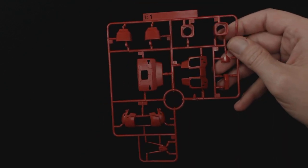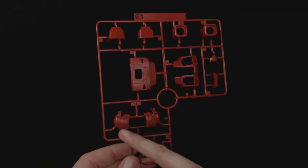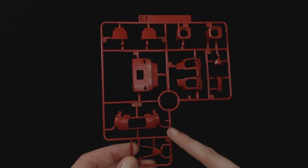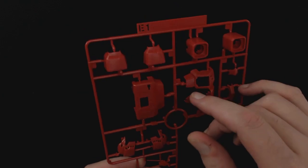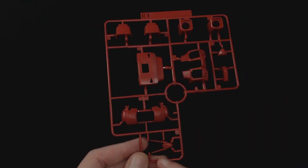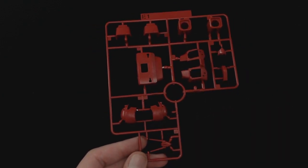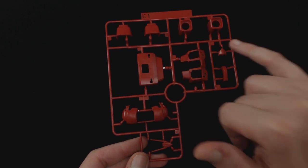Runner E1. You've got head over here, chest pieces, arm pieces. You get your V-fin over here, head crest, face plate.